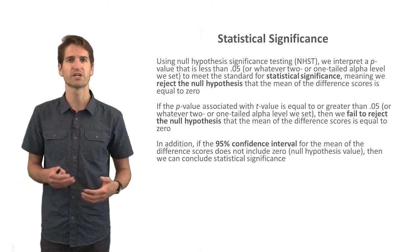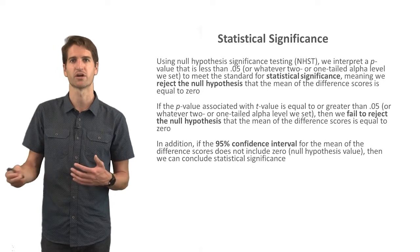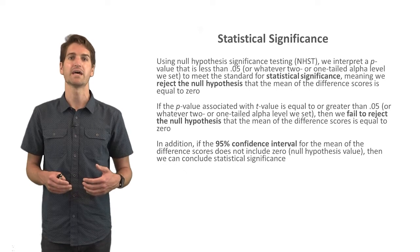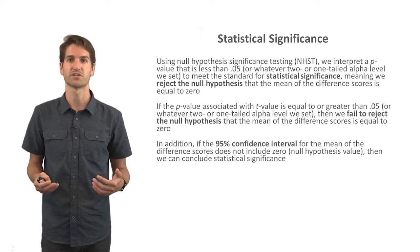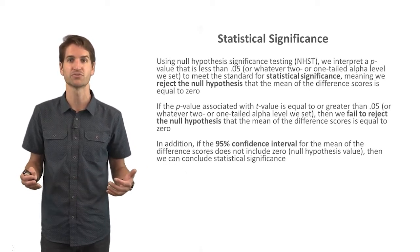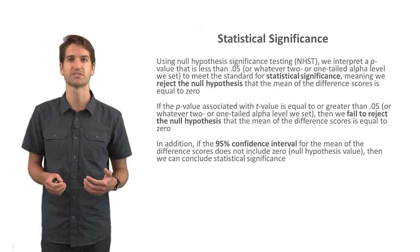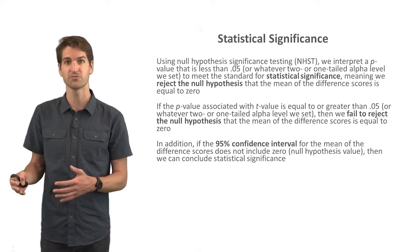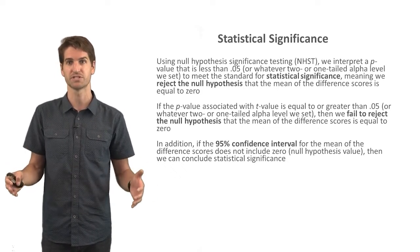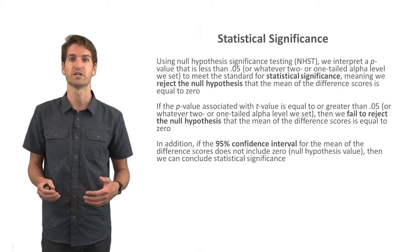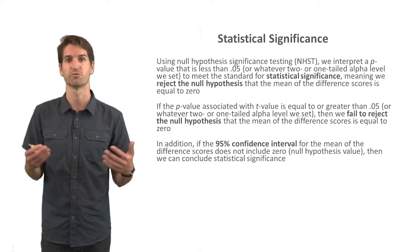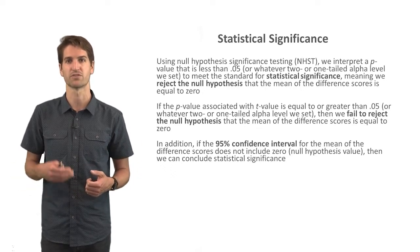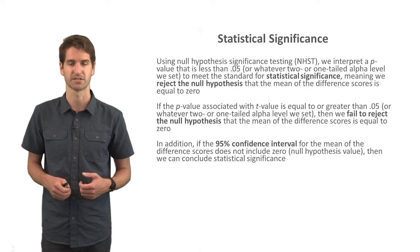We can also construct 95% confidence intervals, which are equivalent to setting alpha at 0.05. If the 95% confidence interval for the mean of the difference scores does not include zero — our null hypothesis value — we can conclude statistical significance. If the confidence interval does include zero, we fail to reject the null hypothesis and would not conclude that the mean of the differences is statistically significantly different from zero.